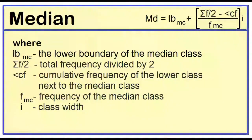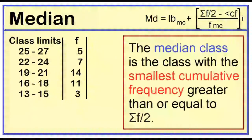Median is equal to the lower boundary of the median class plus the quantity one-half of the total frequency minus the cumulative frequency of the lower class next to the median class, all over the frequency of the median class, times the class width. The median class is the class with the smallest cumulative frequency greater than or equal to one-half of the total frequency.